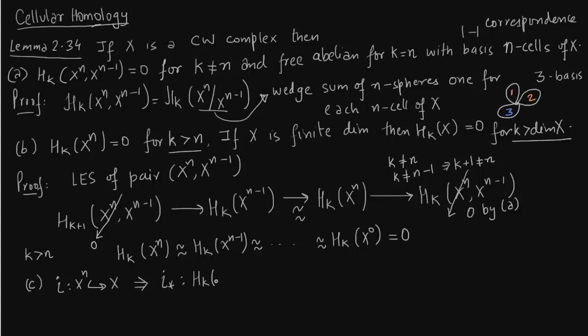So in part C, the inclusion map induces an isomorphism. So space X is the big space. Space X could consist of n plus m cells and that's what we are going to use. So here the index k is less than n. So notice k is varying. You have to start with a fixed pair. The pair I start with was X^n, X^(n-1). Then you need to construct another exact sequence with pair (X^(n+1), X^n), then a third long exact sequence with pair (X^(n+2), X^(n+1)) and so on. So all these different long exact sequences.